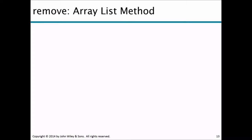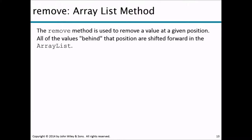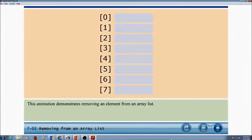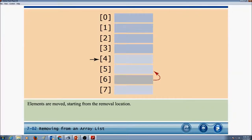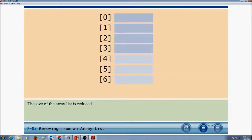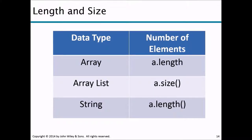The remove method is used to remove a value at a given position. All values behind that position are shifted forward in the ArrayList. For example, names.remove(1) removes the value at position 1. The animation demonstrates this: the element at index 4 is removed, the next element replaces it, elements are moved starting from the removal location forward, the last element to be moved is at the end of the ArrayList, and then the size of the ArrayList is reduced.